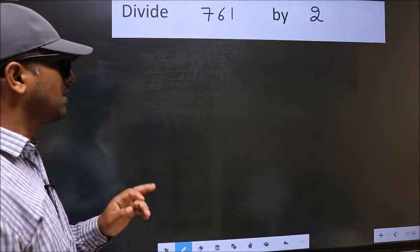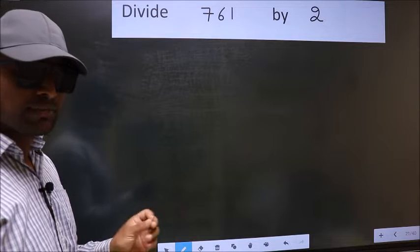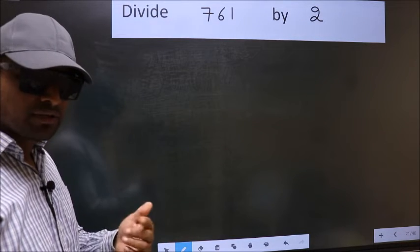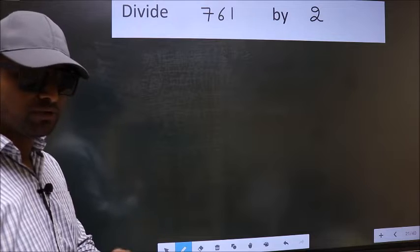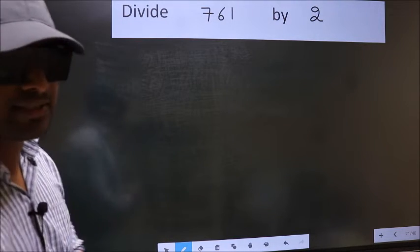Divide 761 by 2. While doing this division, many do this mistake. What is the mistake that they do? I will let you know. But before that, we should frame it in this way.